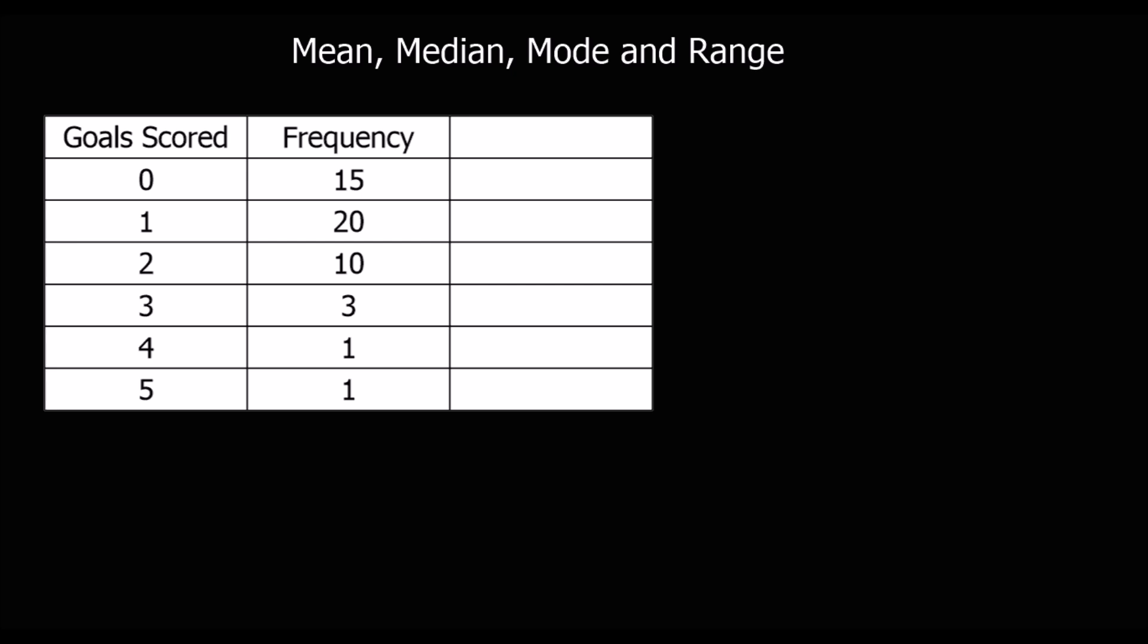When we've got a lot of data, it's usually better laid out in a table. So instead of listing all the numbers out, they can be presented in a table. And we've got to know how to work out the mean, the median, the mode and the range if the data is presented in a table. So let's have a look at what this means.